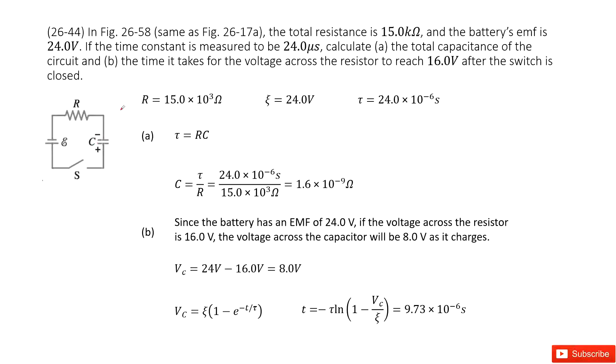In this part, we can see the resistance, the constant epsilon—sorry, the EMF epsilon—and the time constant are given. First part, we need to find the total capacitance for the circuit.